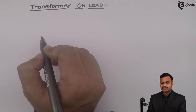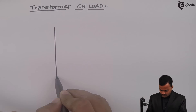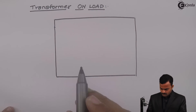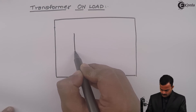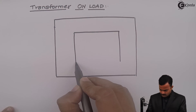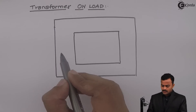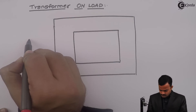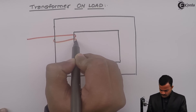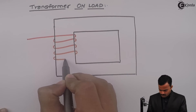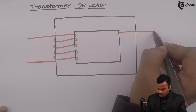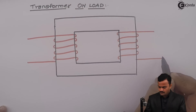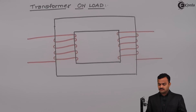I will draw a simple structure of a transformer. This is the core of a transformer, and on the limbs of the core we are having windings. There are N1 and N2 number of turns of these windings.